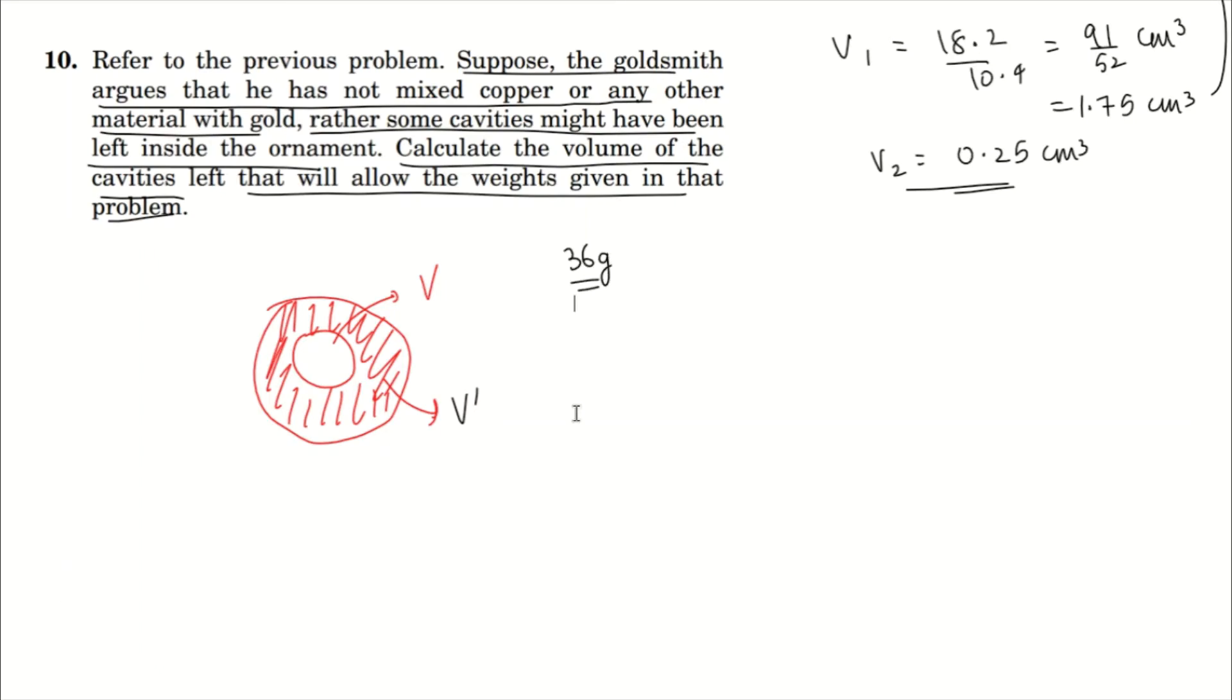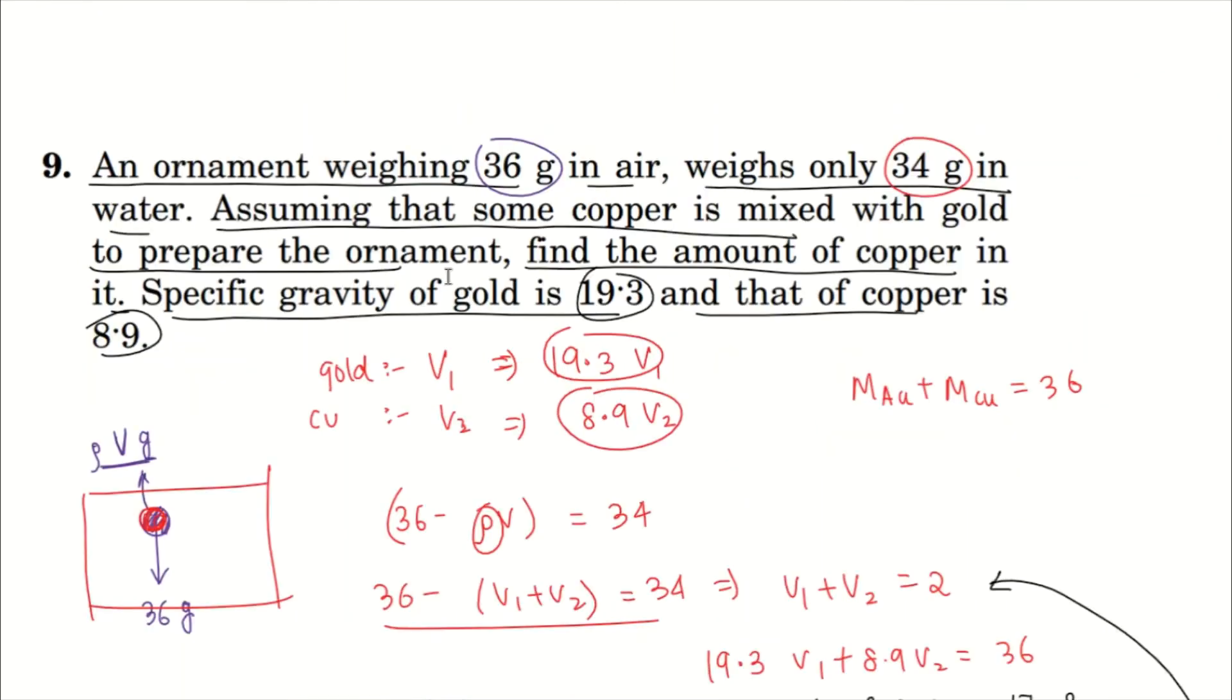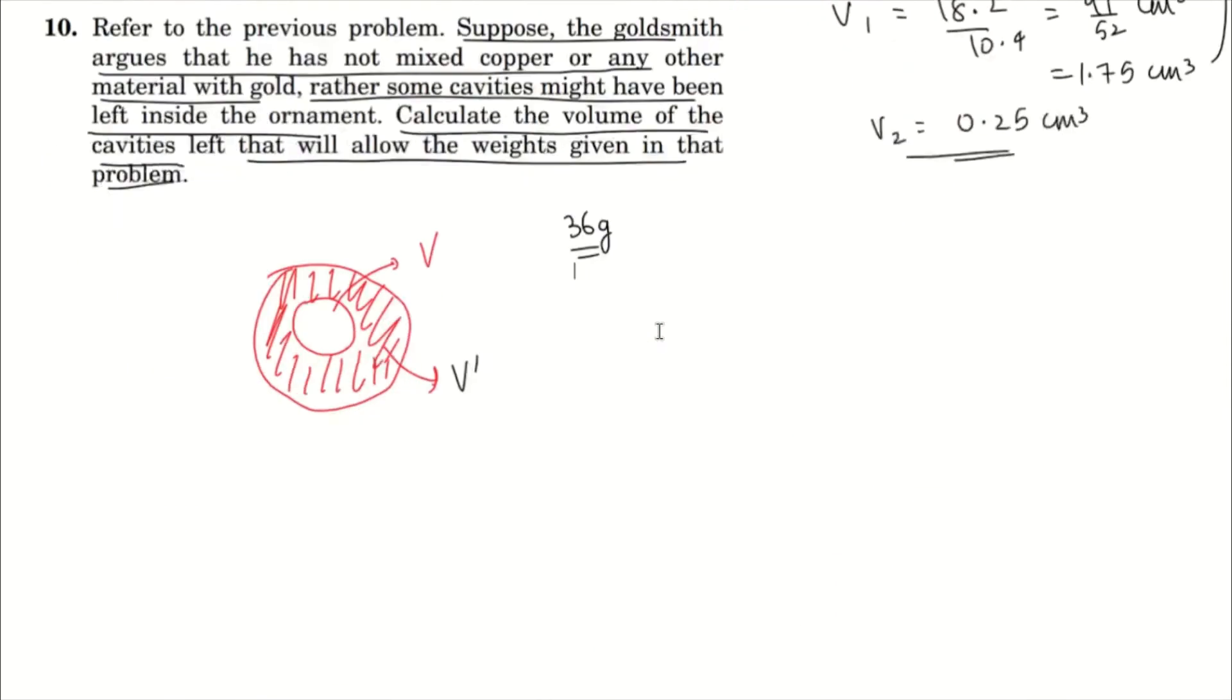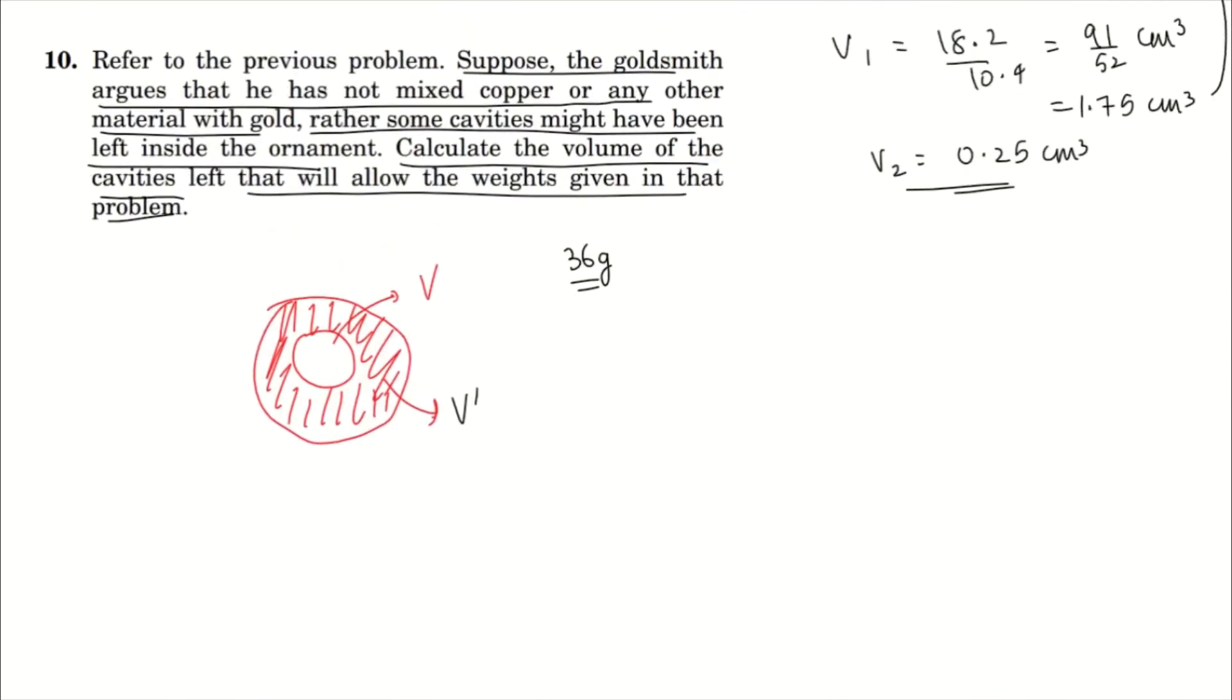And the specific gravity of gold, which we know from the previous question, is 19.3. So what that means is that this mass is solely due to gold. This volume V doesn't contribute anything. So that means 36 equals 19.3 times V'. So one equation is formed. We have two unknowns, so we need a second equation.